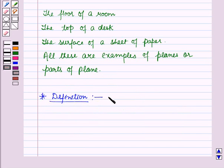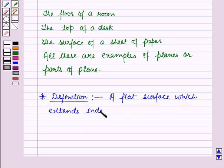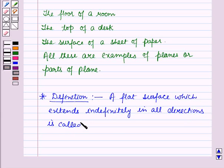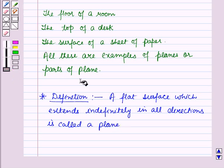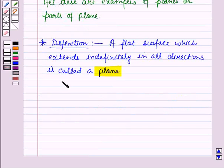Now we will learn about the definition of a plane. A flat surface which extends indefinitely in all directions is called a plane. Also, it does not have any thickness.